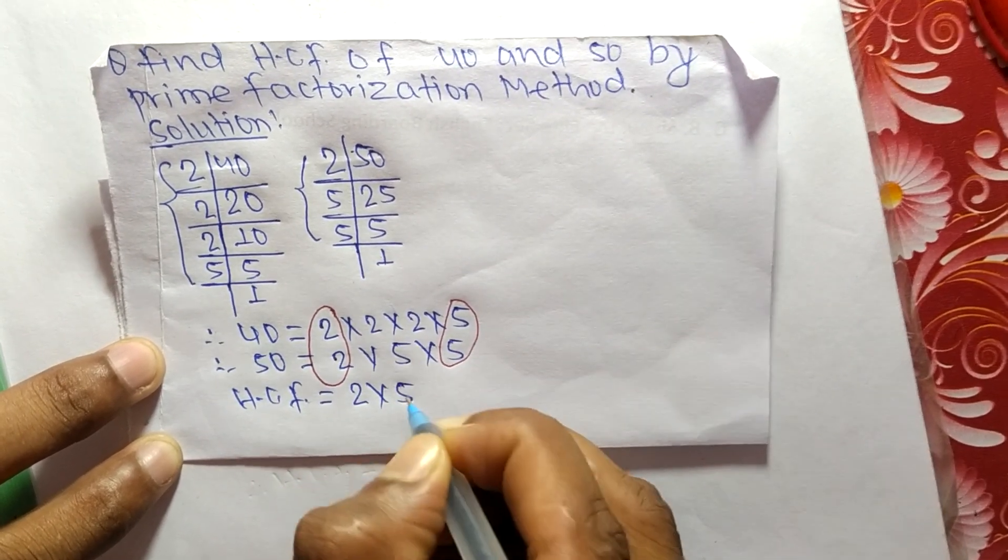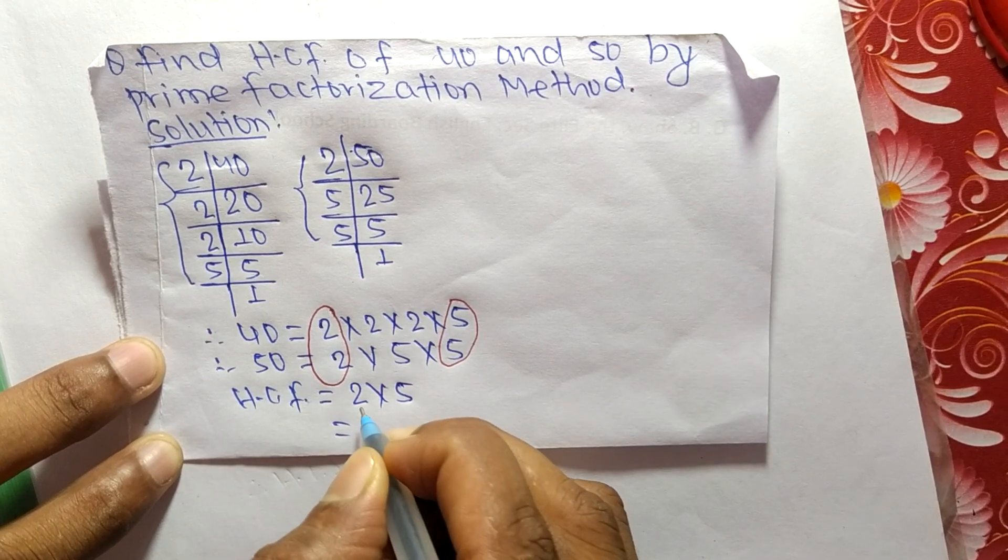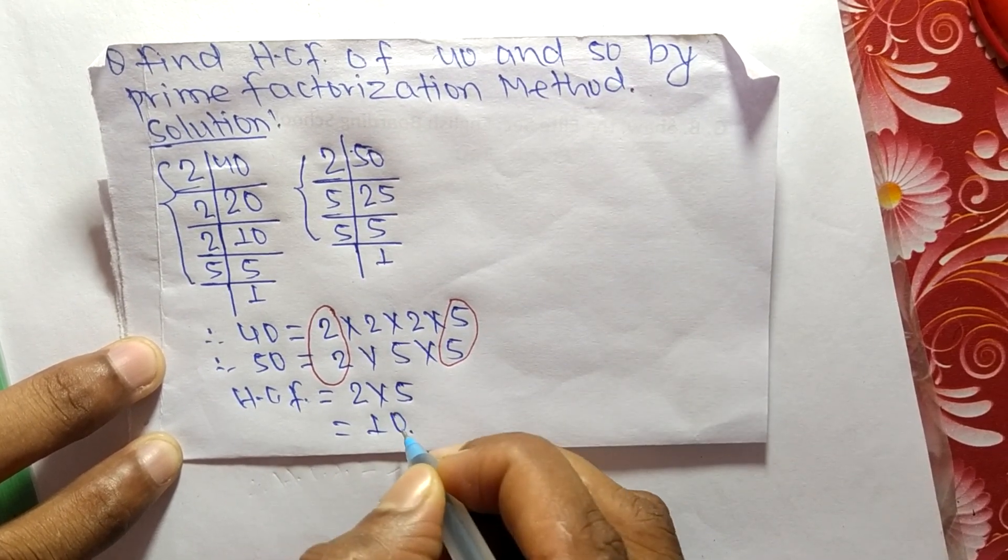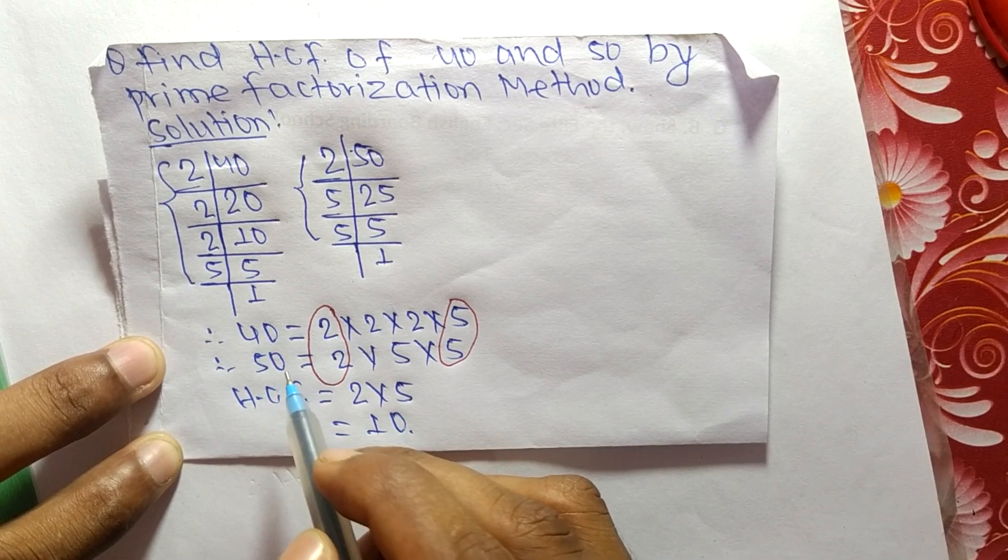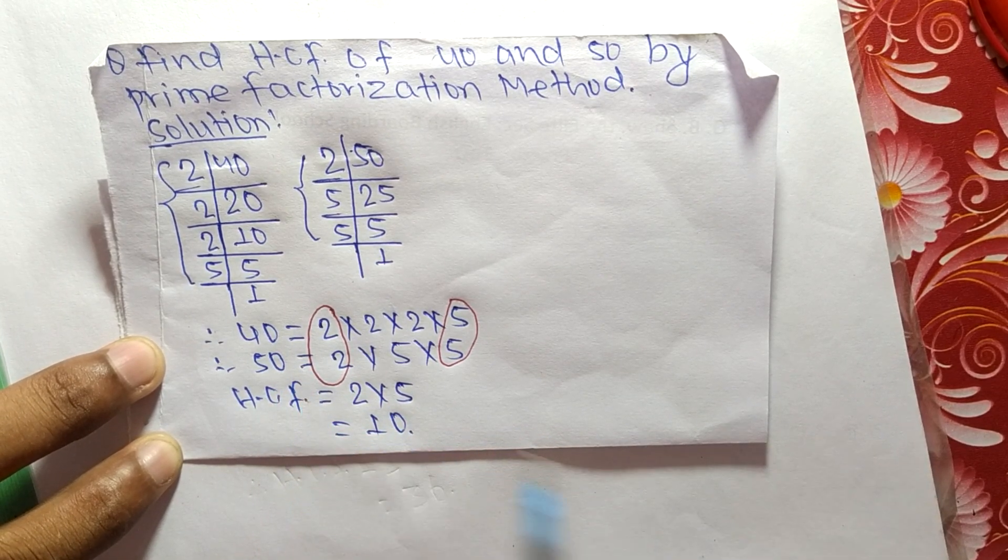So it equals 2 times 5, which equals 10. So 10 is the HCF of 40 and 50. That's all for today, thanks for watching.